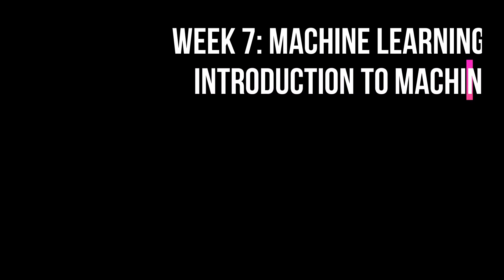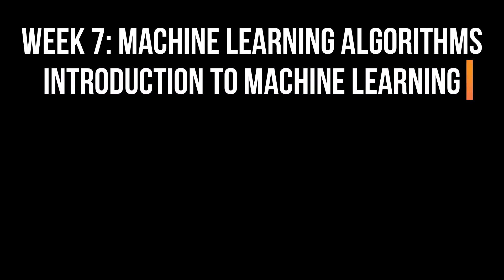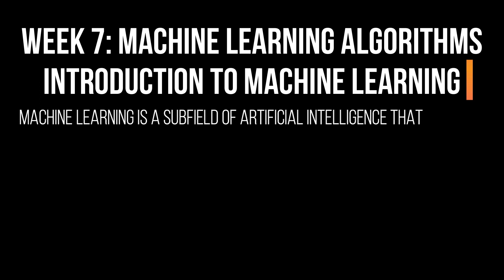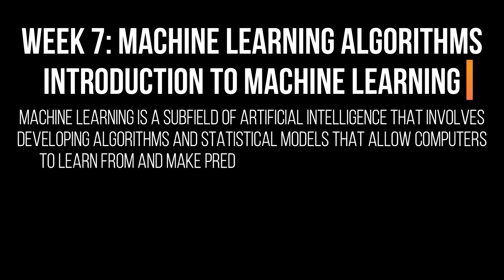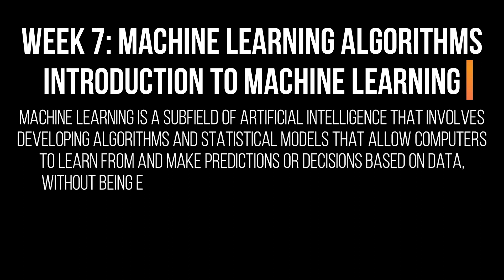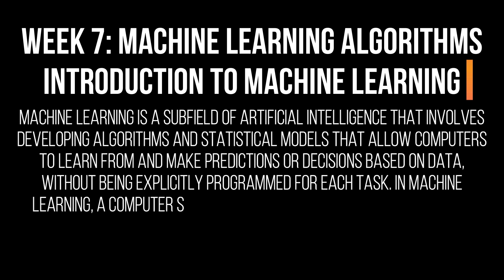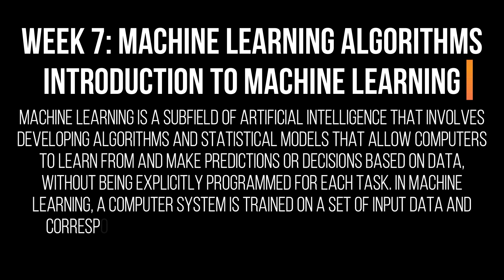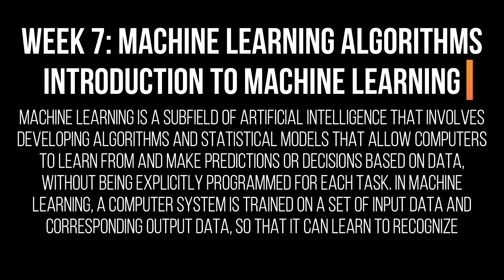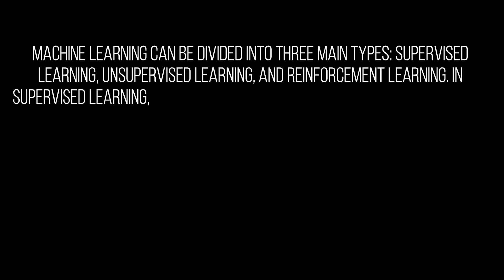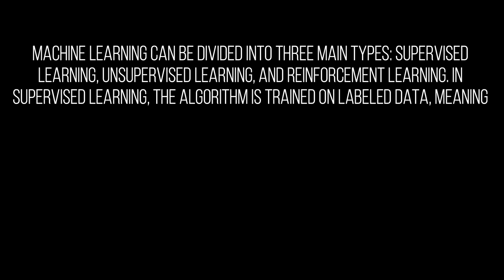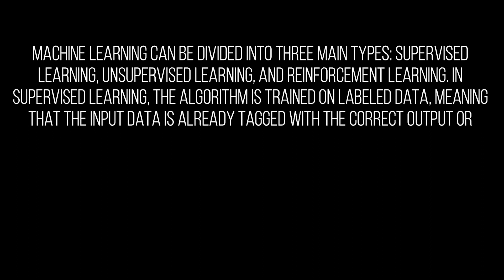Week 7: Machine Learning Algorithms. Introduction to Machine Learning: Machine learning is a subfield of artificial intelligence that involves developing algorithms and statistical models that allow computers to learn from and make predictions or decisions based on data without being explicitly programmed for each task. A computer system is trained on a set of input data and corresponding output data so that it can learn to recognize patterns and make predictions about new input data. In supervised learning, the algorithm is trained on labeled data, meaning that the input data is already tagged with the correct output or target variable.